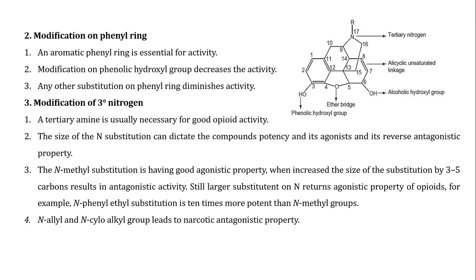Modification on tertiary nitrogen: a tertiary amine is usually necessary for good activity. The size of the N-substitution can dictate the compound's potency and its agonist or antagonist properties. The N-methyl substitution has good agonist property. When the size of substitution is increased by 3–5 carbons, it results in antagonist activity. Still larger substituents on nitrogen return agonist property. For example, N-phenylethyl substituent is 10 times more potent than the N-methyl group. N-allyl and N-cycloalkyl groups lead to narcotic antagonist properties.